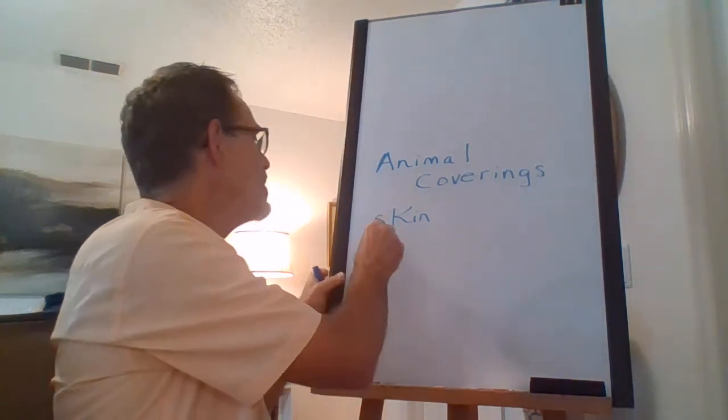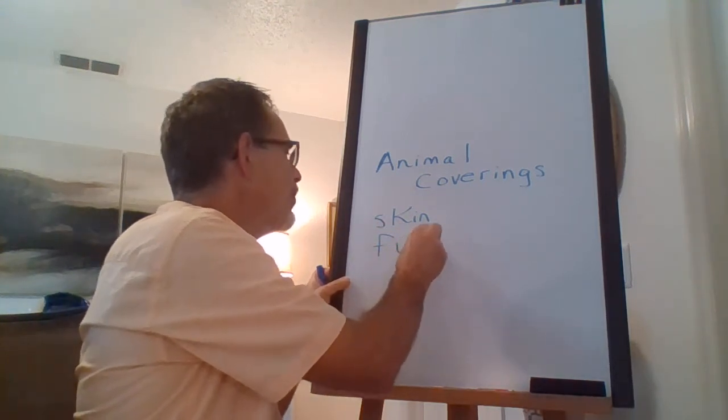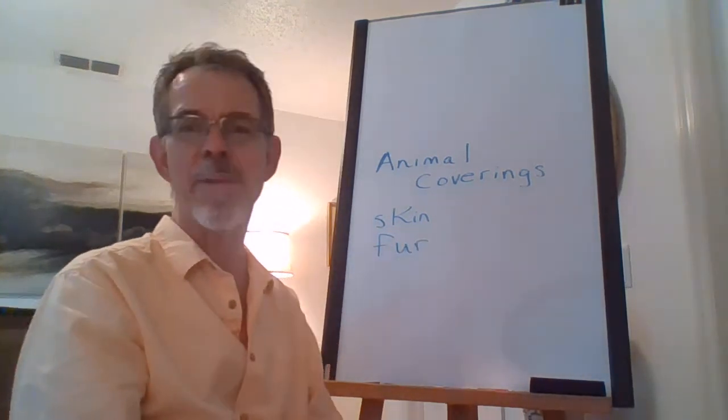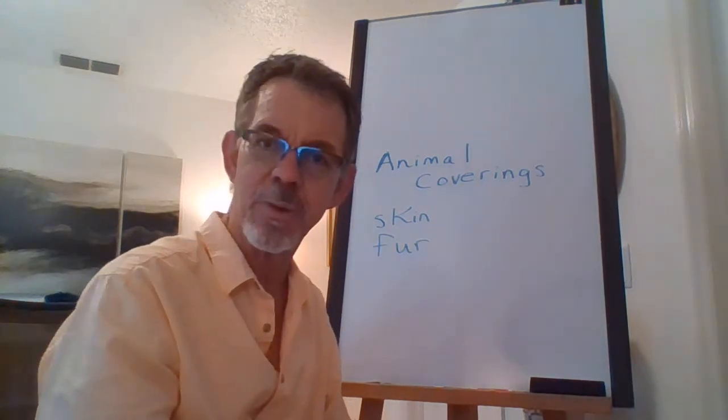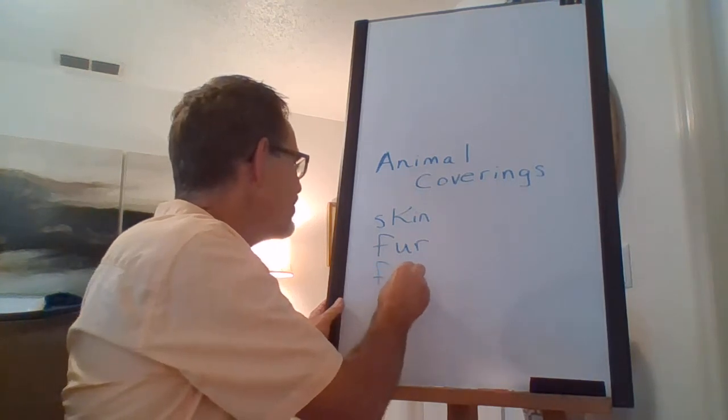That's right. One of them is fur. And how about a chicken? What is a chicken covered with? Yep. A chicken is covered with feathers.